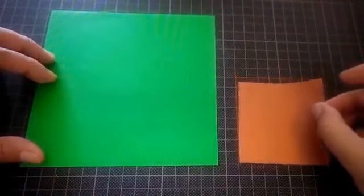First take one green and one fourth brown origami sheet.